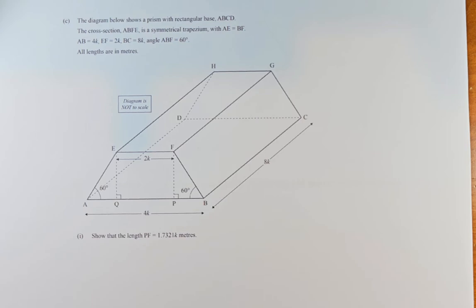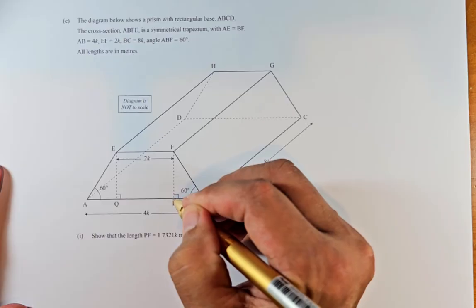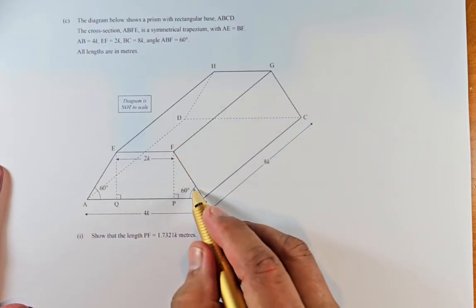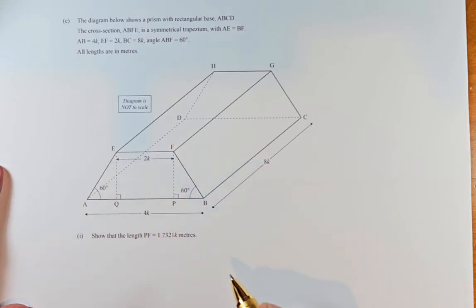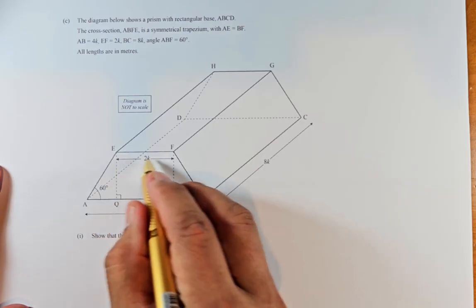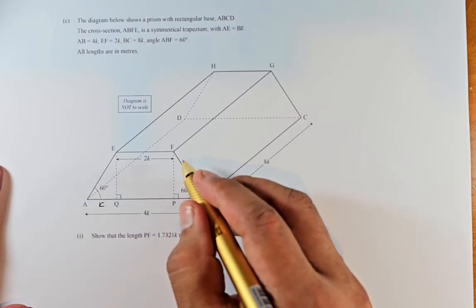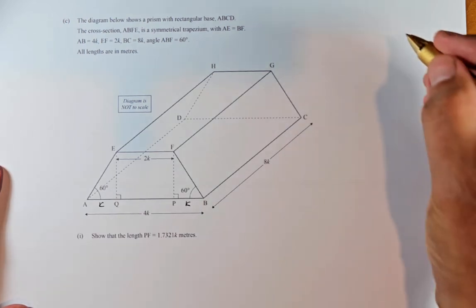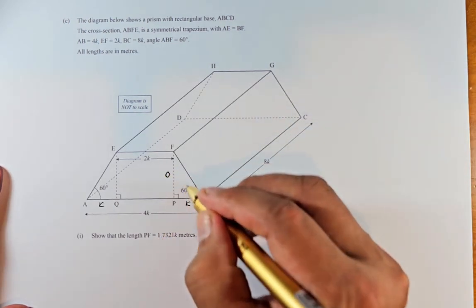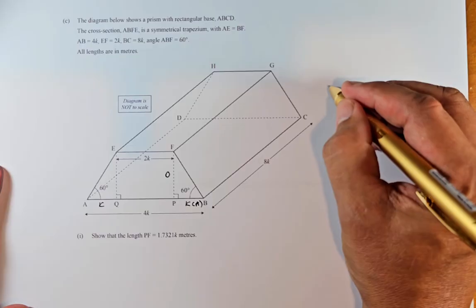Show that the length PF is going to 1.7321k. We are going to find this length EF, and we know that this is 60 degrees. We use a right angle triangle formula or trigonometric ratio. We need AP because if this is 2k, this is k and this is k because they add up to 4k because they are symmetrical. So that's k and this is 60 degrees, so we can use the formula tangent 60 using this opposite and this is adjacent.